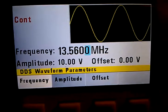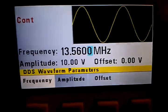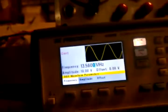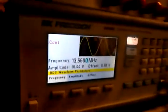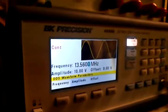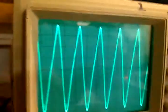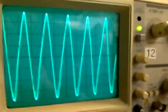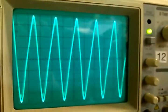What we have here is 13.56 MHz coming out of the BK function generator 4040B. This is what the waveform looks like coming out of the RF amplifier we built, a one tube EL84 amp.